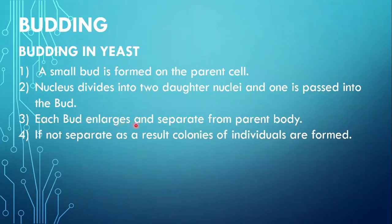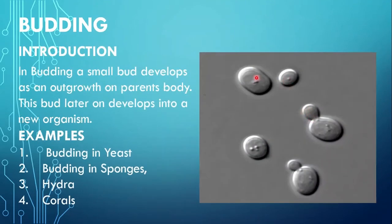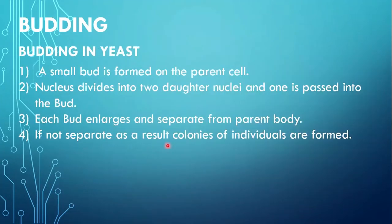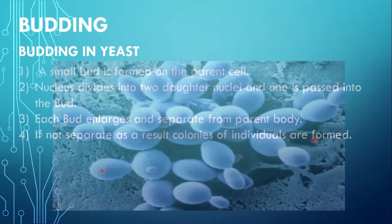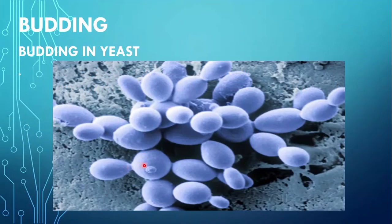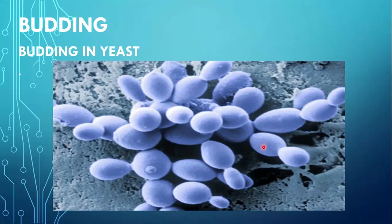Number 3: each bud enlarges and separates from the parent body. The bud separates from the parent body and grows into a new organism similar to the parent cell. If it does not separate, colonies of individuals are formed. In case the daughter cell cannot detach from the parent cell and remains attached, continuing to grow and divide, forming more new daughter cells, a colony is formed this way. This diagram shows the colony of yeast cells.